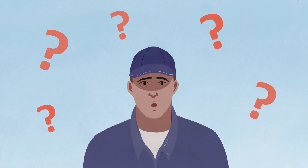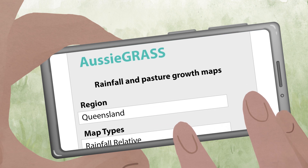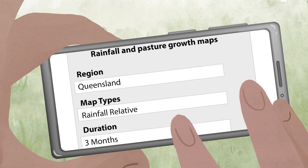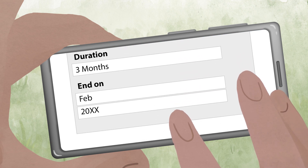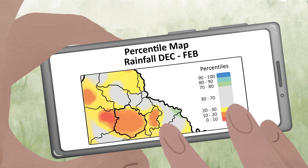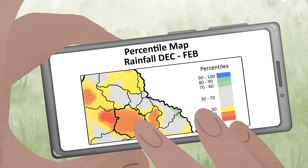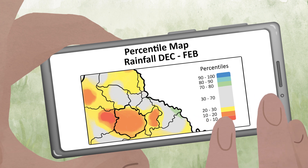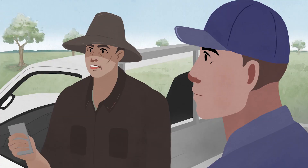I'm still not with you, Mick. Here, I'll show you. This is a percentile map of rainfall for the last three months. This is us here. We're this orange colour, which is the lowest 20% of rainfall on record, or in the 0 to 20th percentile range. So for the last three-month period, there's been low rainfall for this region compared to the past.